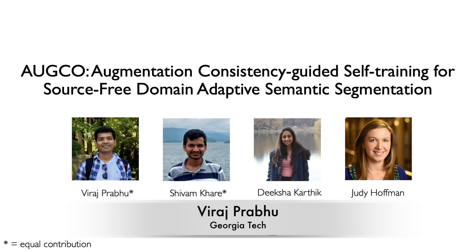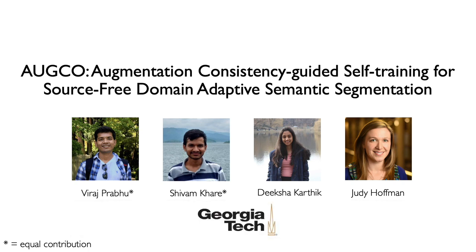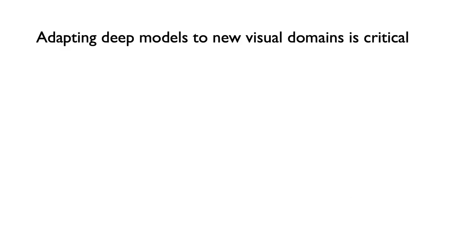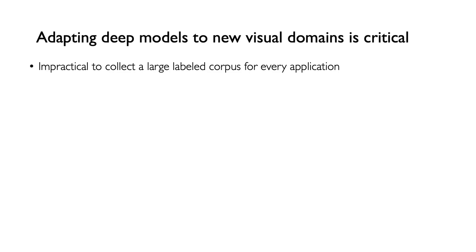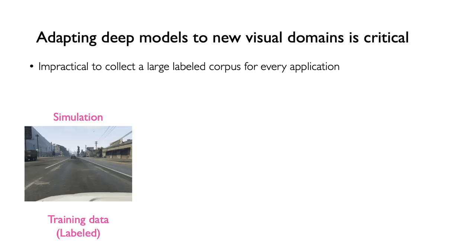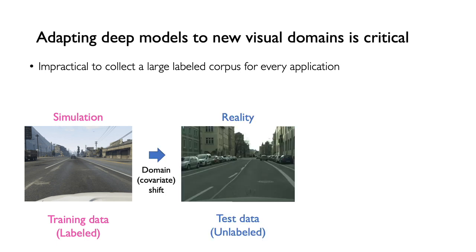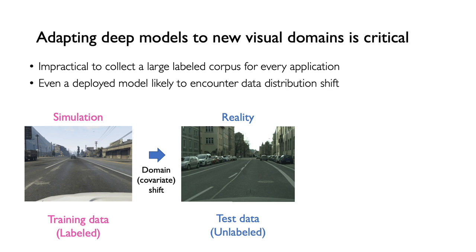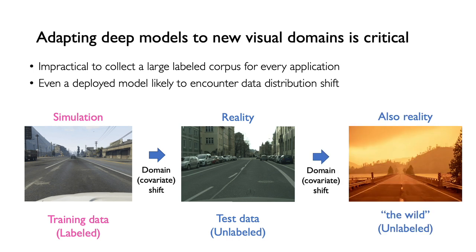Hi, my name is Viraj Prabhu, and I'll be presenting our work on Augmentation Consistency Guided Self-Training for Source-Free Domain Adaptive Semantic Segmentation, joint work with Shivam Khare, Diksha Karthik, and Judy Hoffman. Adapting deep models to new visual domains is an important problem since it's impractical to collect a large labeled dataset for every new application. Ideally, we would train on cheap simulated labeled data and deploy it to work in the real world on unlabeled target data, overcoming domain shift. Even after deployment, a model continues to encounter distribution shift, for example with changing weather patterns.